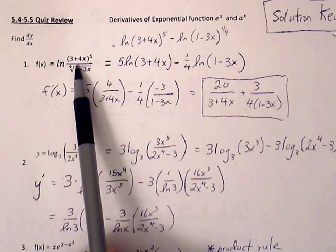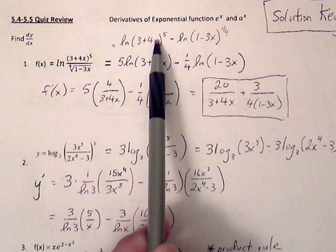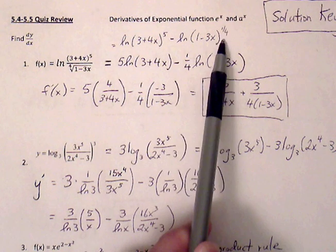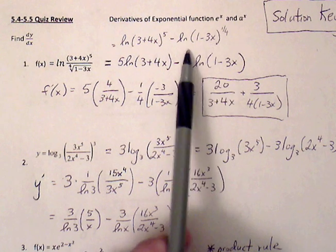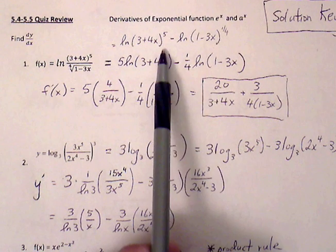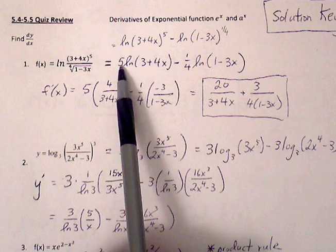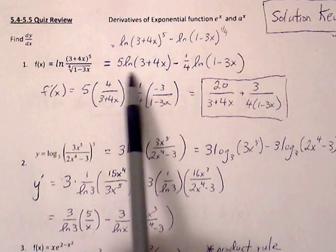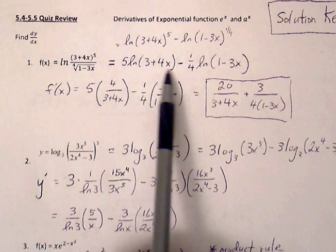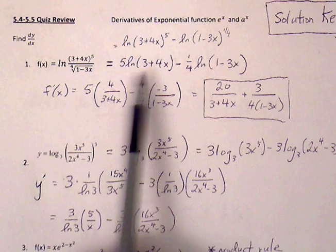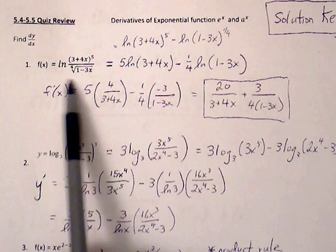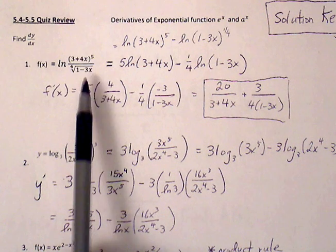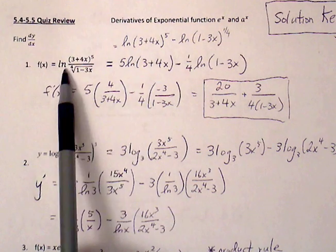We can expand this as ln of a over b: ln of 3 plus 4x to the 5th minus ln of 1 minus 3x to the 1/4th, and then continue expanding by bringing the exponents down — bring down the 5, bring down the 1/4. Now we have something much easier to differentiate than applying chain rule and quotient rule together, which would be a lot messier.